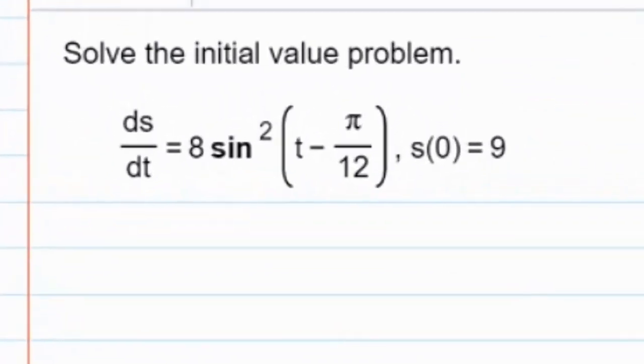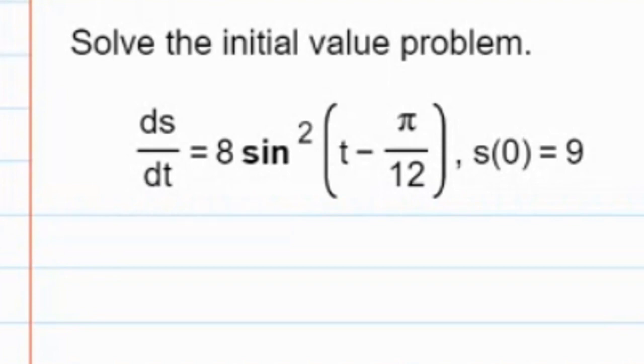This is called an initial value problem because they give you the derivative and you want to get back to the original function, and they give you a point on the original function, which we refer to as the initial value.